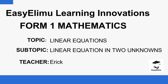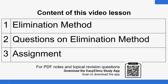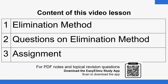Previously, we covered the solutions of linear equations in one unknown. Now we want to see how you can be able to solve for unknowns when we have two unknowns. We have a few questions here to help us with illustrations on how to solve for unknowns when we have two unknowns.